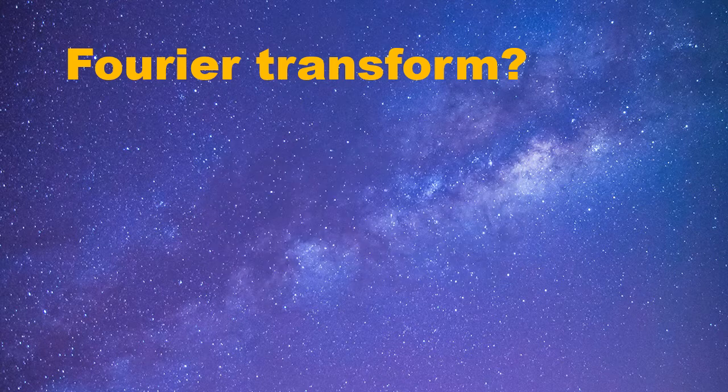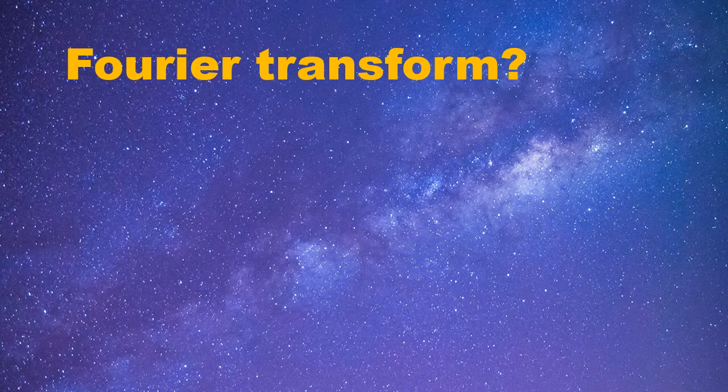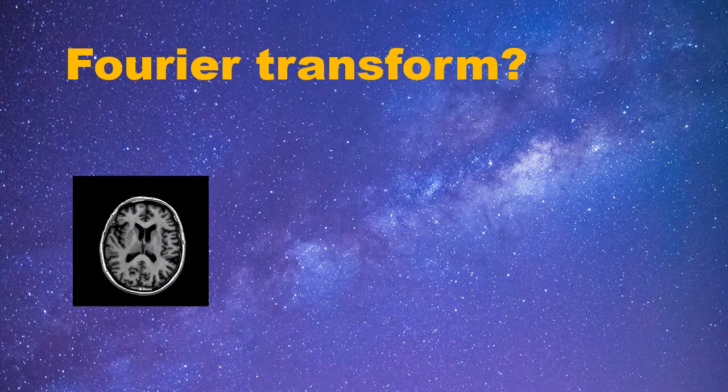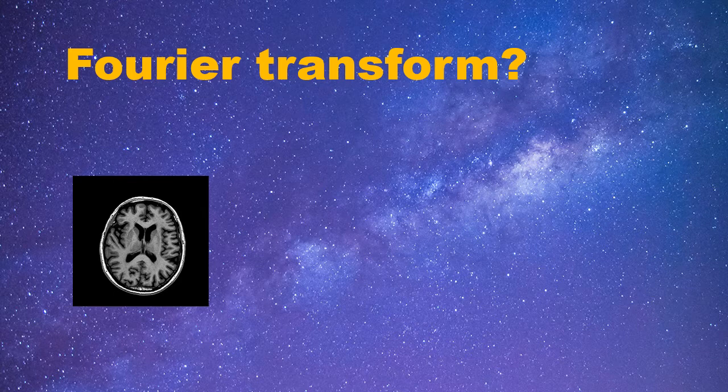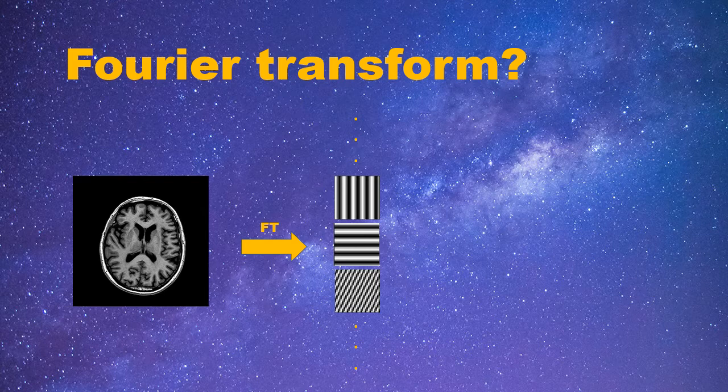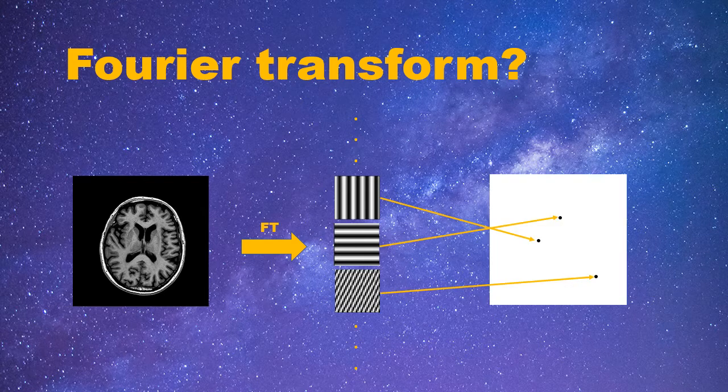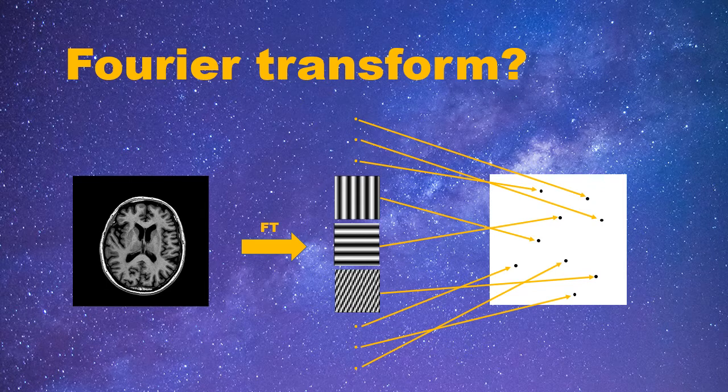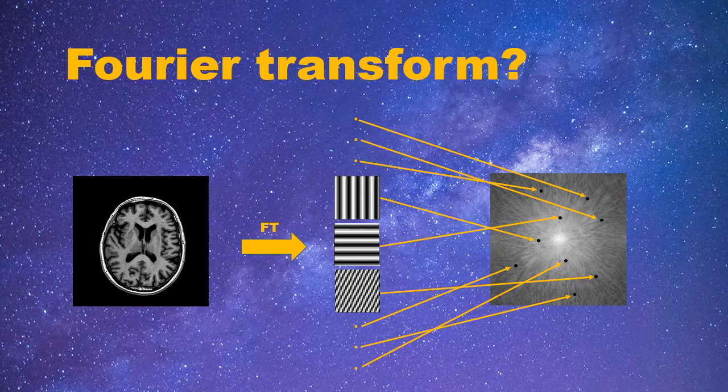Now, we will expand it to 2D for a brain image. By taking the Fourier transform on this brain image, it will be first decomposed into many components, and each component is a striped image with a unique spatial frequency. Then, they will be placed onto the k-space according to their spatial frequencies. After all components are placed correctly onto the k-space, the Fourier transform is finished and we will get this k-space of this brain image.